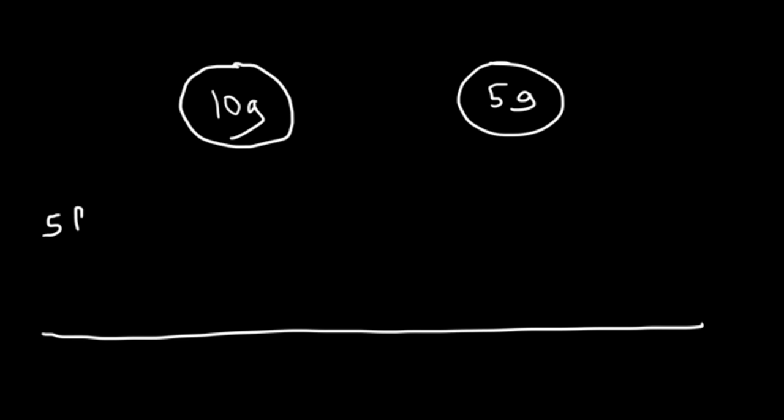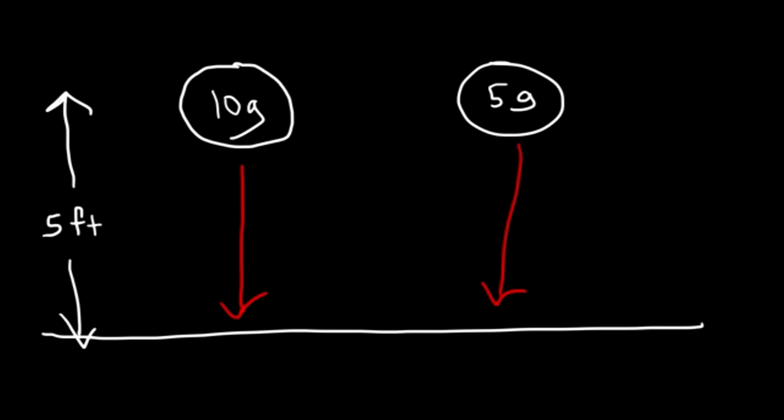Let's say you hold two balls in the air - a 10 gram metal ball and a 5 gram metal ball - five feet above the ground at the same height. Once you release them from rest, both balls will be in free fall. Which one will hit the ground first? Both objects will reach the ground at the same time because they're placed at the same height and are under the influence of the same gravity - Earth's gravity.